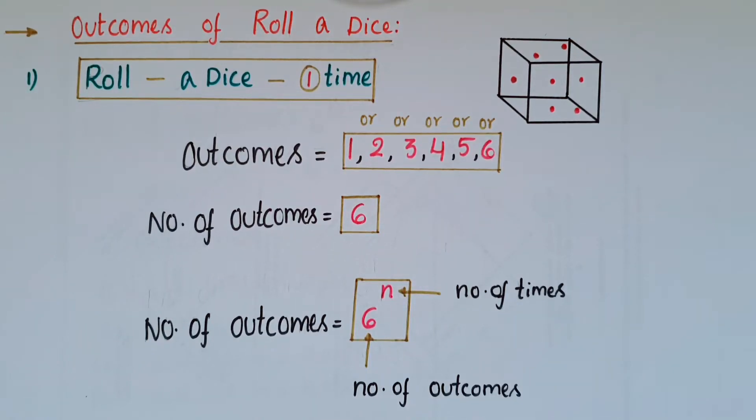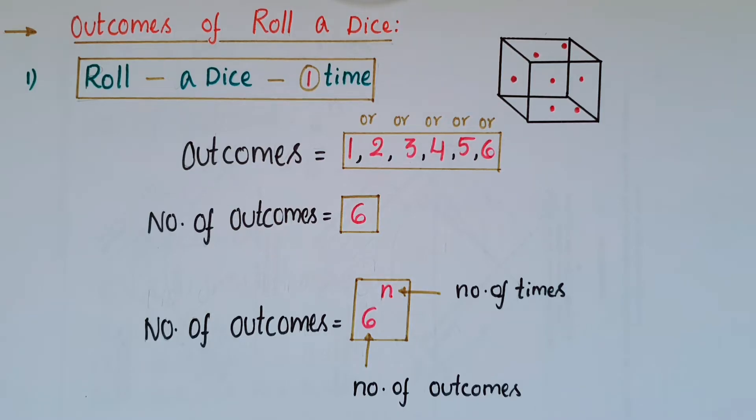Hello everyone, today I am going to tell an easy way to find outcomes of roll a dice one time and two times.